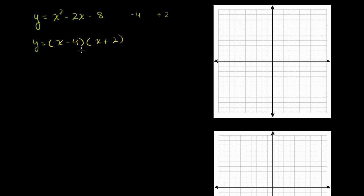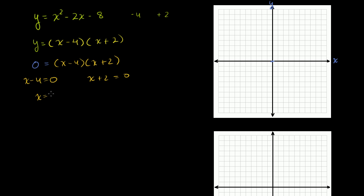Now let's figure out where this intersects the x-axis. The x-axis is where y is equal to 0, so let's set this equal to 0: 0 is equal to x minus 4 times x plus 2. We've seen this multiple times before — this means that either x minus 4 or x plus 2, or both, have to equal 0. So x minus 4 equals 0, or x plus 2 equals 0.